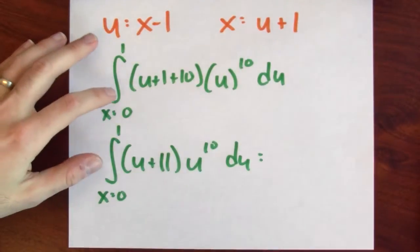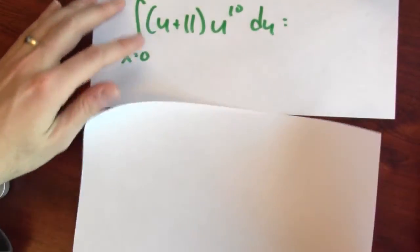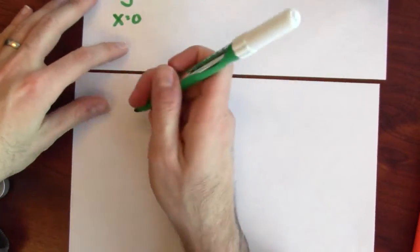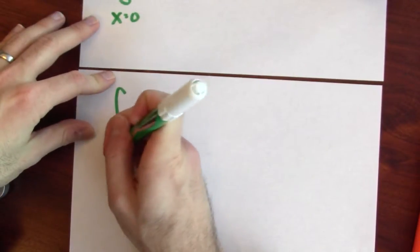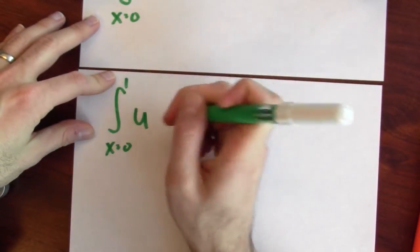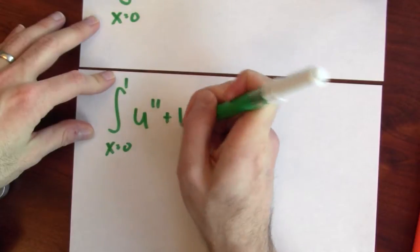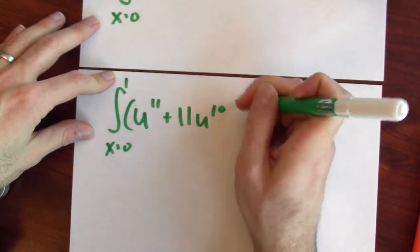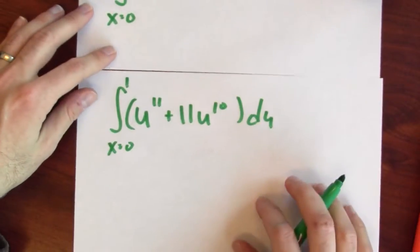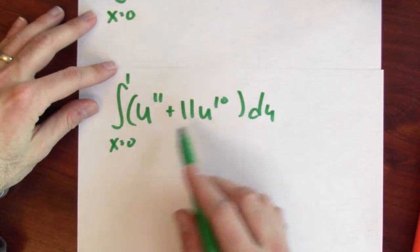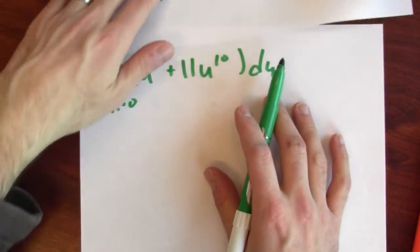I could expand this and that's the same as the integral x goes from 0 to 1 of u to the 11th plus 11 u to the 10th du. But now this is just asking me to anti-differentiate a polynomial, which I can definitely do.